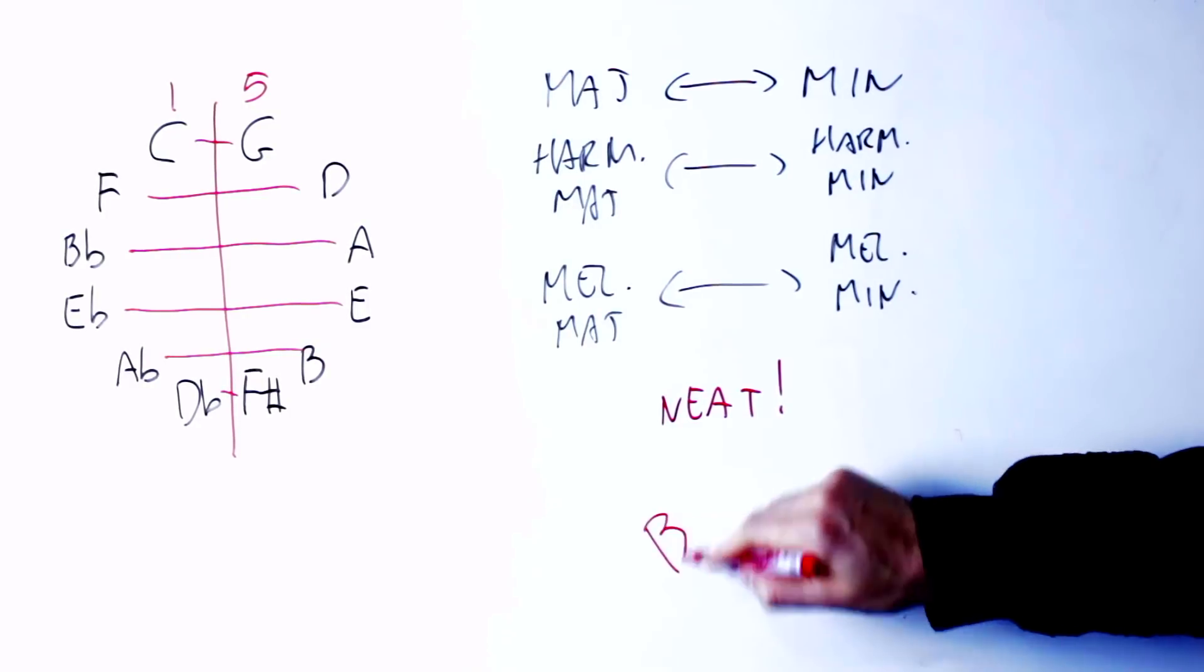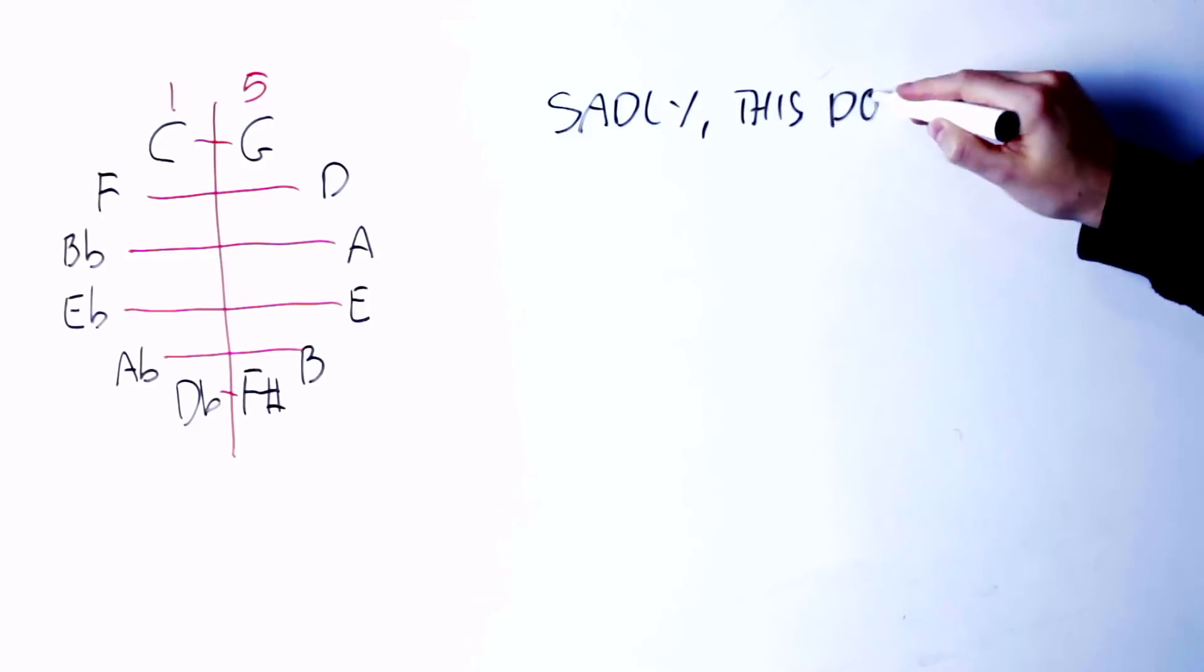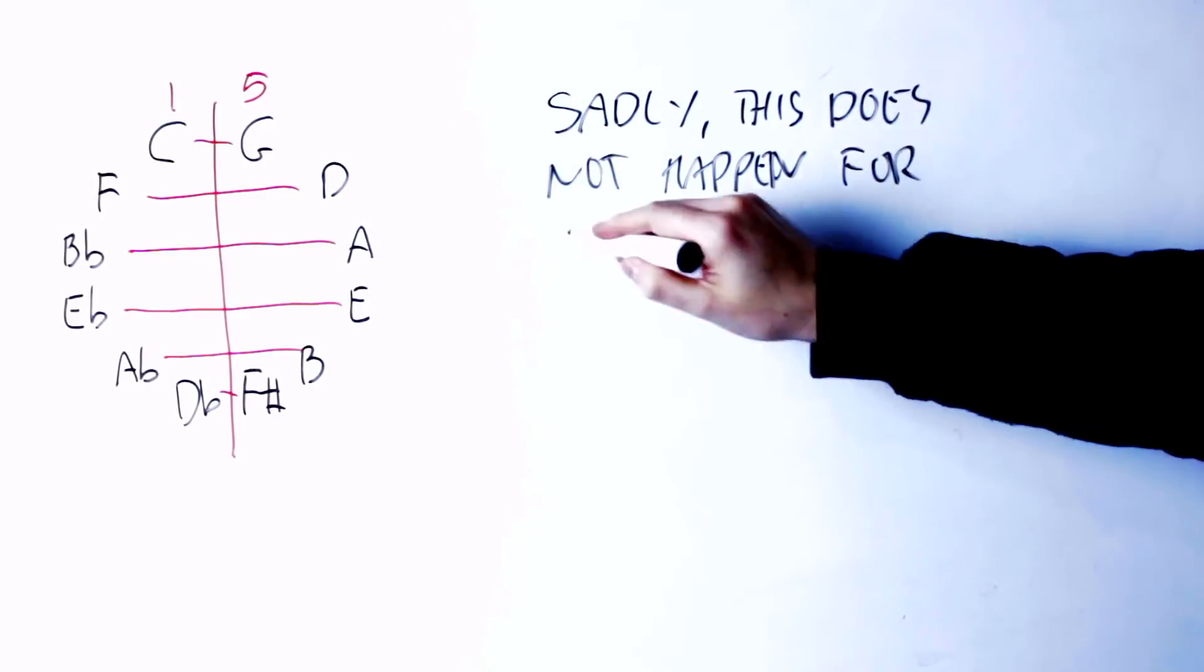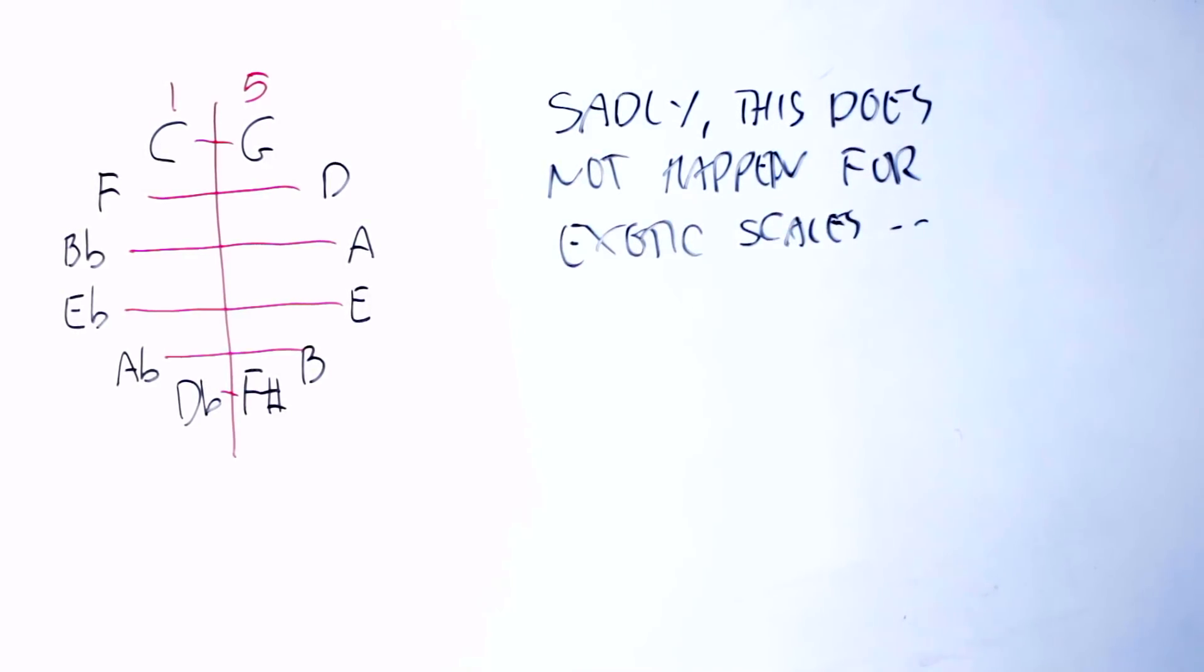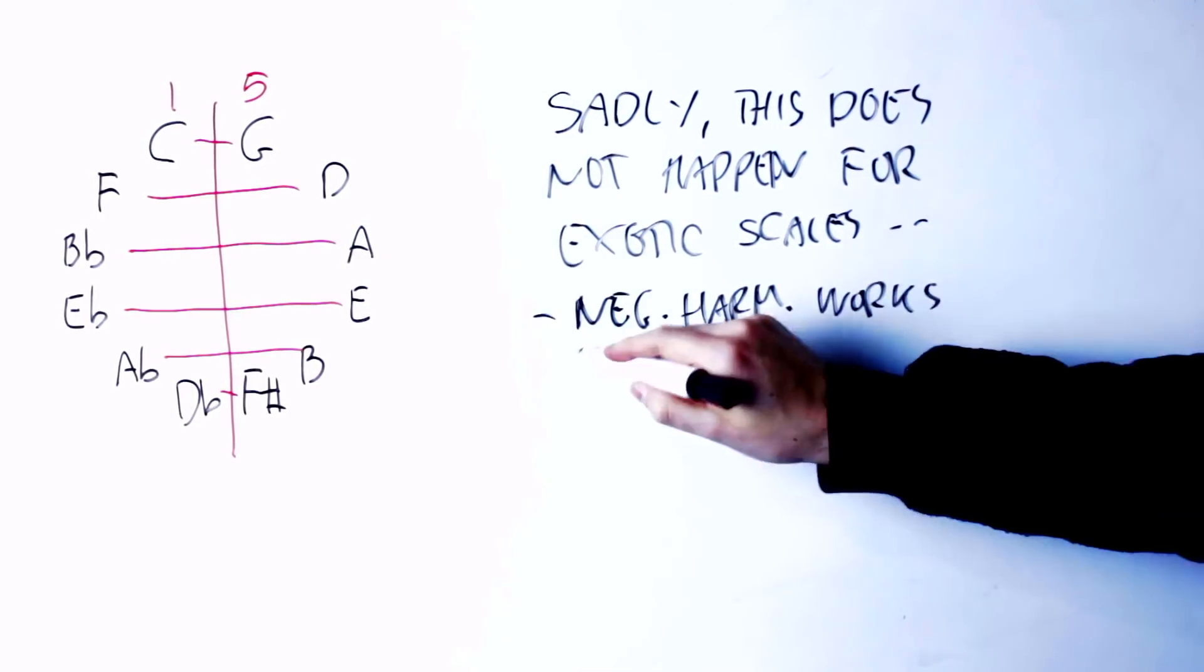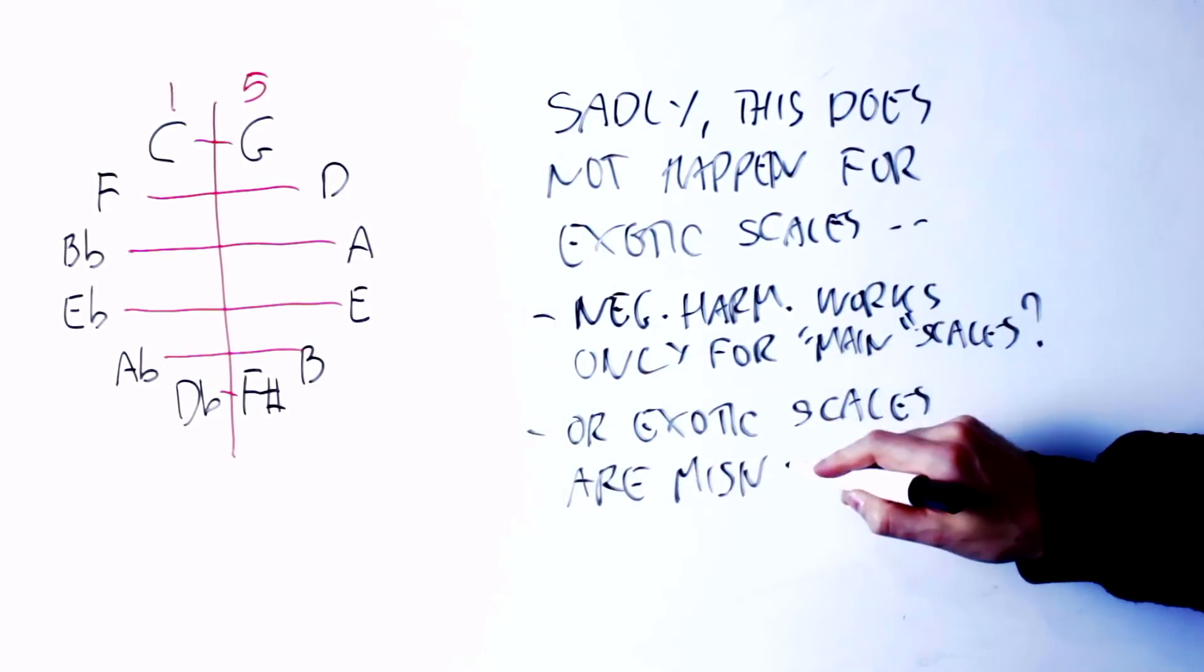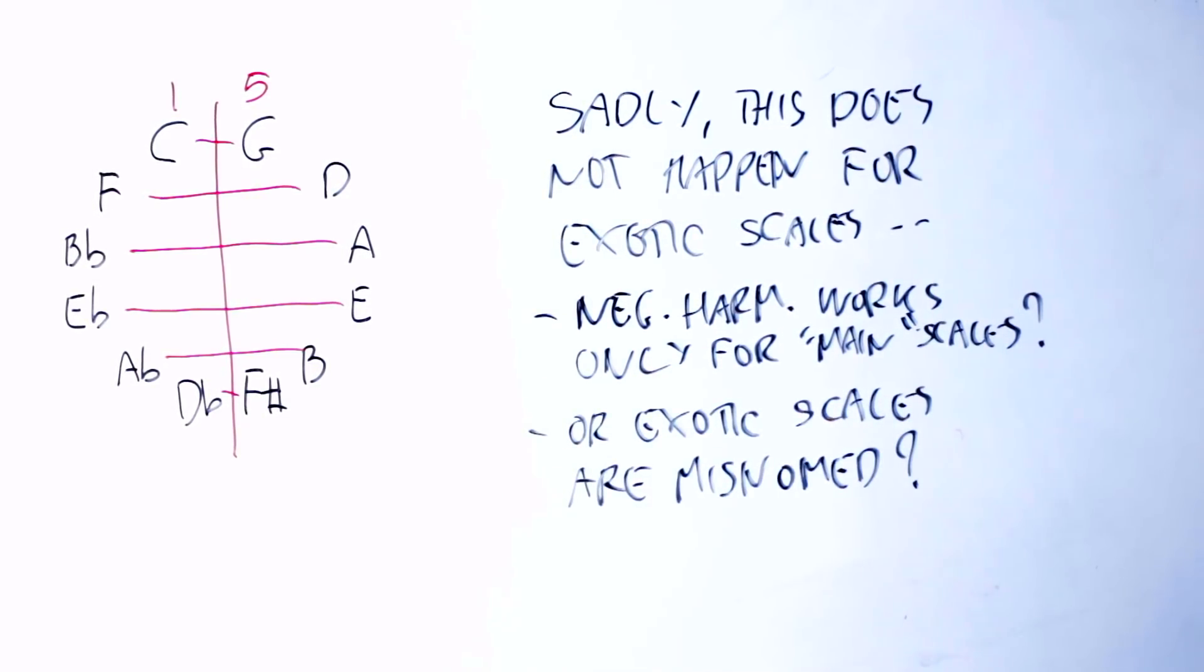Or at least this works for the main scales of the tonal system: major, natural minor, melodic minor, and harmonic minor. I would like to tell you that this happens also for exotic scales, like for instance the Hungarian major and minor or the Neapolitan major and minor, but sadly this is not true. Either this correspondence between major and minor scales through negative harmony works only for the main scale, or it is possible that some exotic scales have been named wrongly.